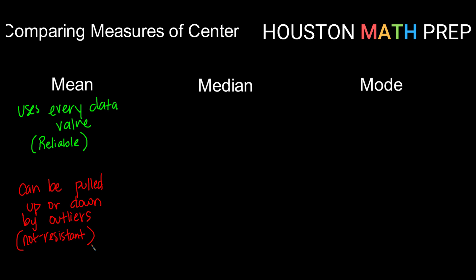Let's move over to our next column, the median. The median has a con that is the opposite of our pro for the mean. It is not reliable because only the center one or two data values are used. If you get kind of a wacky center one or two, you might get a median that isn't really representative of the data that you have.